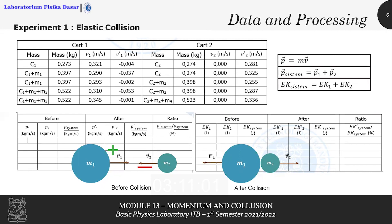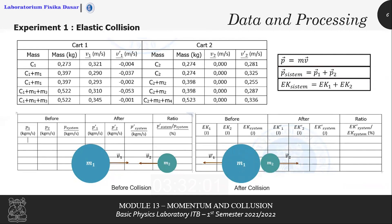The first experiment is an elastic collision. The raw data will be rendered as shown on the screen. Before the collision, the first cart moves to the right so its speed is positive, while the second cart is stationary. After the collision, the first cart moves to the left so its speed is negative, while the second cart moves to the right so its speed is positive. You are asked to calculate momentum and kinetic energy using the formula described previously, then fill in the blank table as shown on the screen.